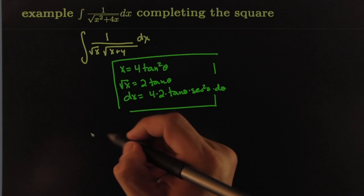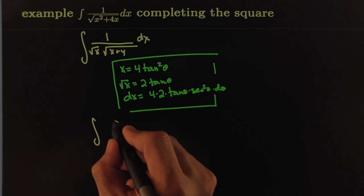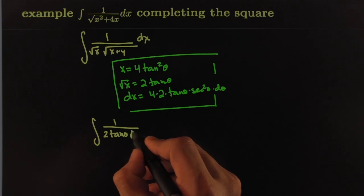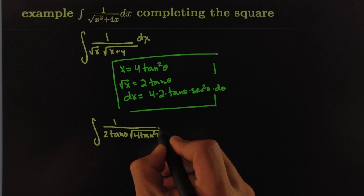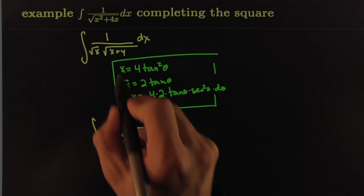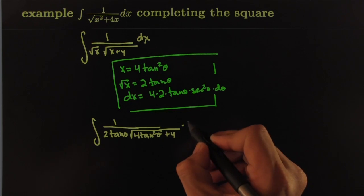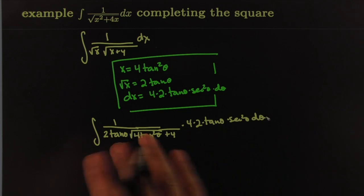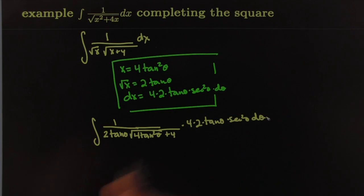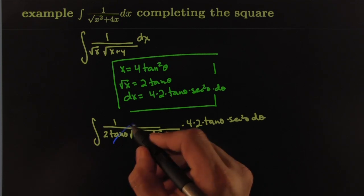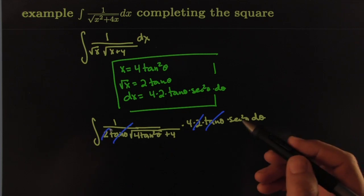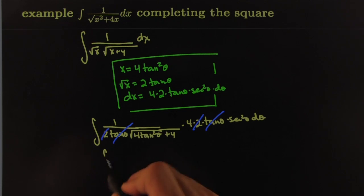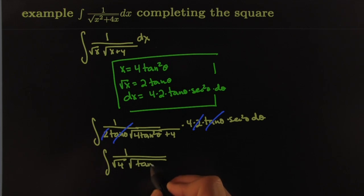Substituting in, the integral becomes 1 over (2 tanθ · √(4 tan²θ + 4)) times 8 tanθ sec²θ dθ. It looks like a mess, but things cancel quickly: the tanθ cancels, the 2 cancels the other factor, and we can factor 4 from under the square root. This becomes 1 over √4 · √(tan²θ + 1) times the remaining terms — giving us secant expressions.